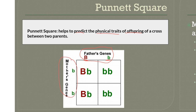Each of these squares in the Punnett square is going to represent 25% of the offspring. You bring one letter down from the father's genes and the other letter from the mother's genes across. So in this case, 50% because the one underneath is the same — big B, small b. So 25% in this square plus 25% in this square means that 50% of the offspring will have the genotype big B, small b.